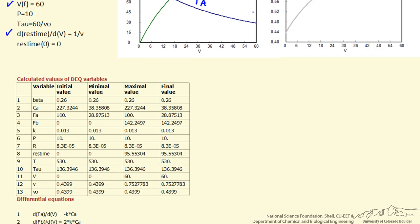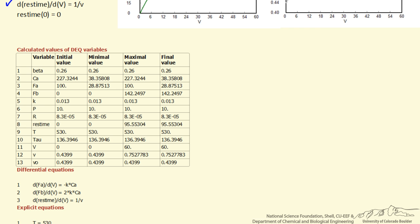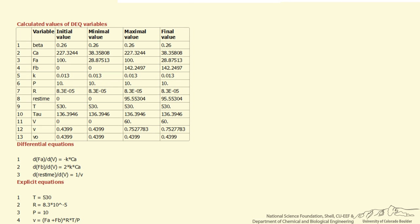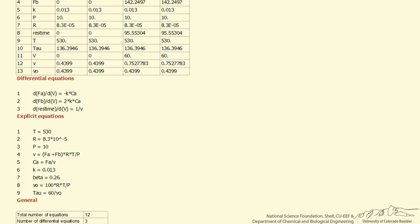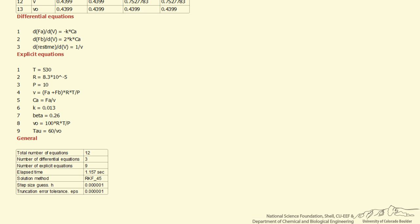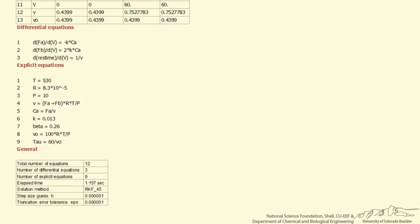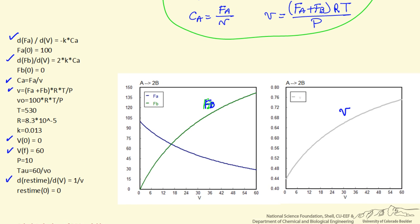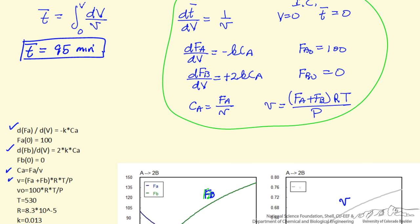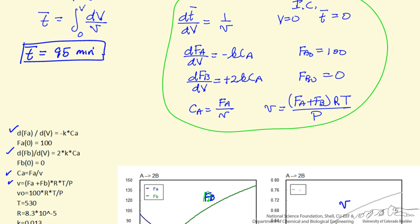These are the details of the calculations, the output from the Polymath program, where it shows the residence time and the actual equations and the Runge-Kutta technique used here. We are able, by integrating, to calculate the residence time in the reactor, and it changes from the space time because of the increase in number of moles due to reaction.